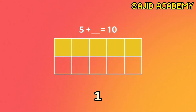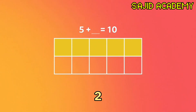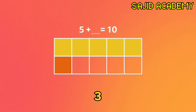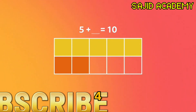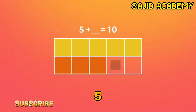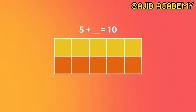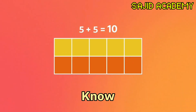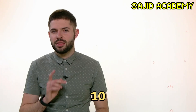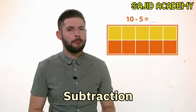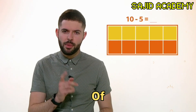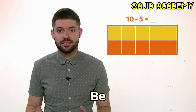Let's count: one, two, three, four, five. So five plus five equals ten. Now that we know five plus five equals ten, how can we work out ten minus five? Remember, subtraction is the opposite of addition. So if five plus five is ten, then ten take away five must be five.